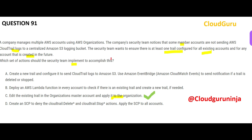Option B says to deploy a Lambda function in every account to check if there is an existing trail and create a new trail if not. However, Lambda is not the right tool here. Lambda is primarily used to invoke certain things or process data — it times out after 15 minutes. In the context of CloudTrail management across accounts, Lambda doesn't have a clear purpose here.